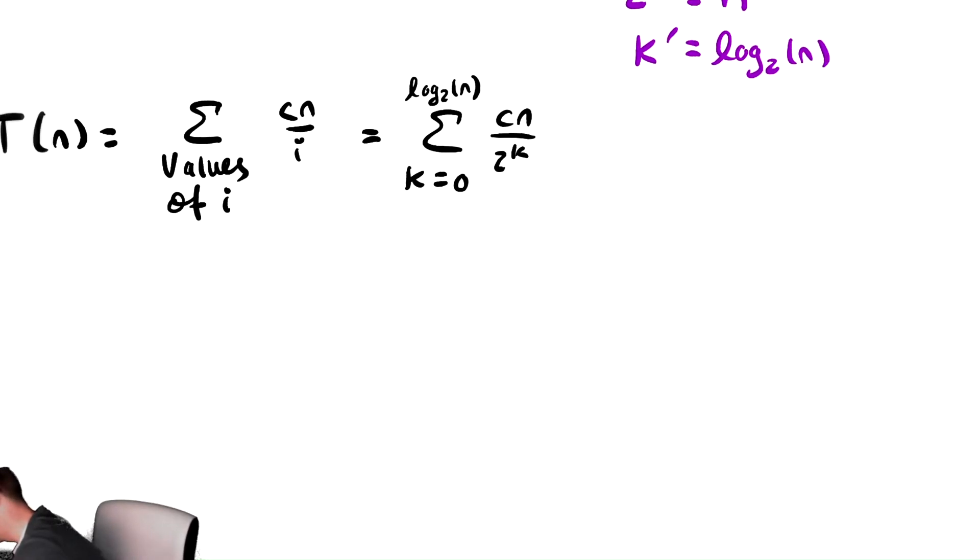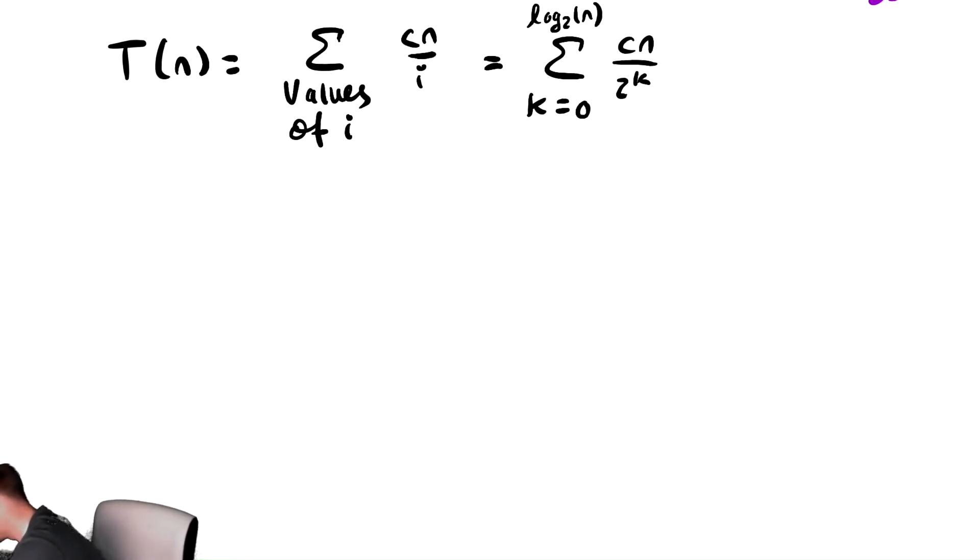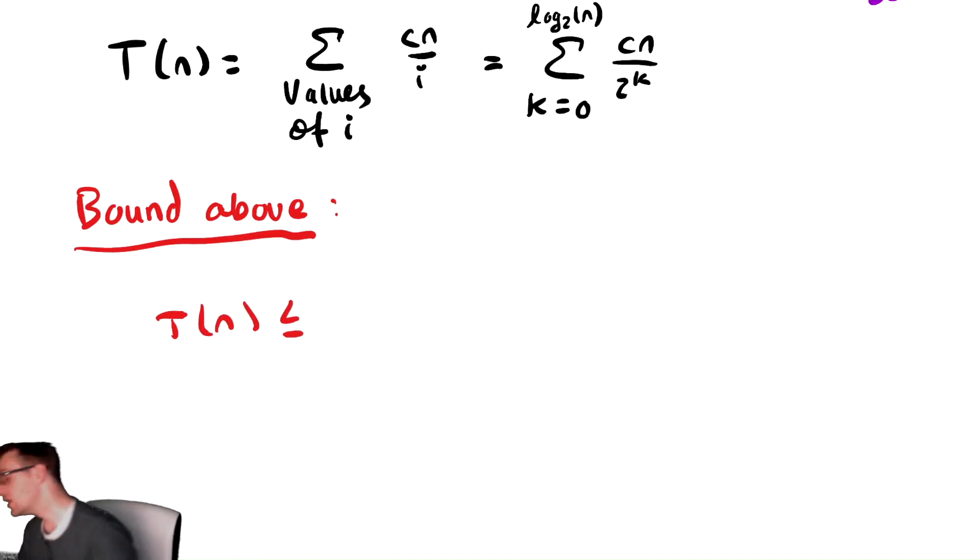So to analyze this we need to bound it above and below. We don't need to, but I prefer to do that. So we're going to bound this above. So we have T(n) is less than or equal to. The way that we bound above a decreasing geometric sum is we bound it above by an infinite geometric series. So I'm going to factor out the cn and replace that top bound with infinity.